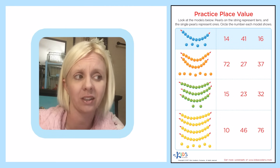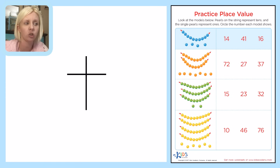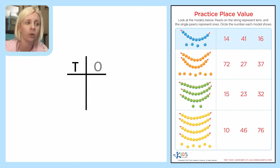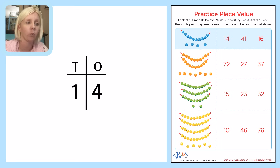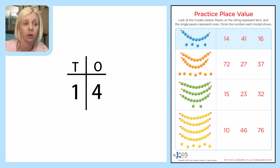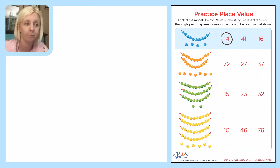Another way I like is to make a T-chart, which is basically like a lowercase T. We put tens on the left side and ones on the right side. Count how many strings of 10 we have — just one — so we put a one on the left. Then count the individual single pearls: 1, 2, 3, 4. We have one ten and four ones, which is also the number 14. We can come over here and circle it.